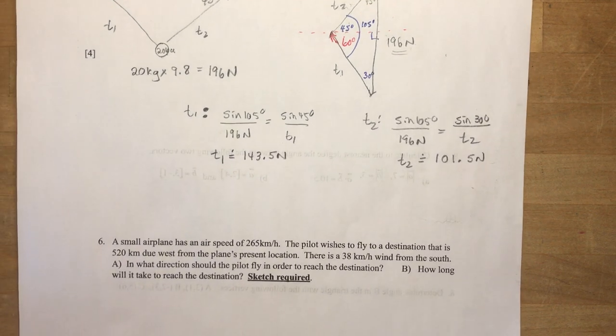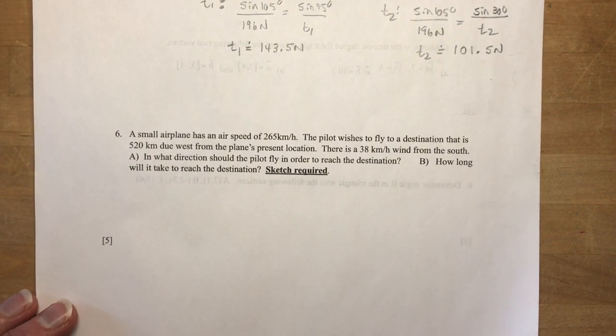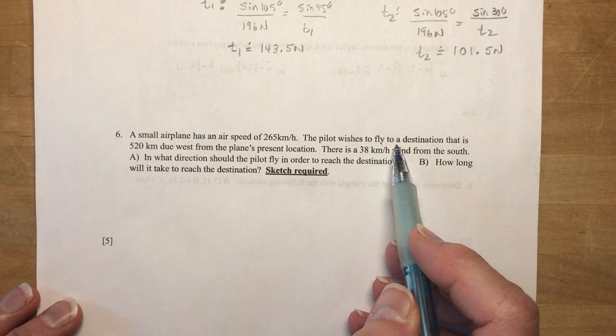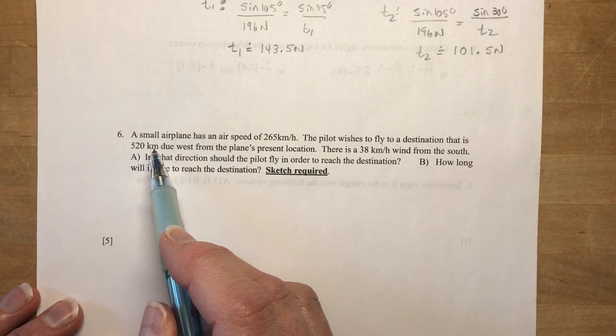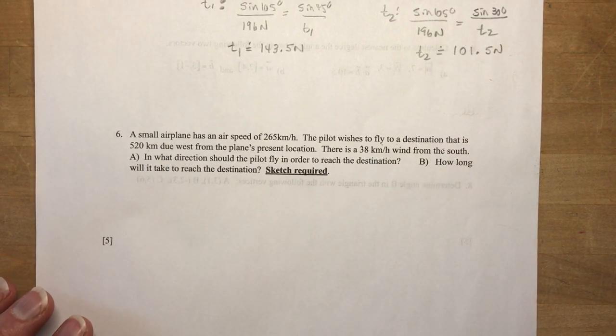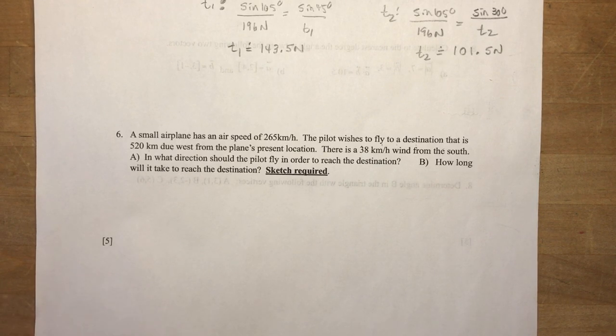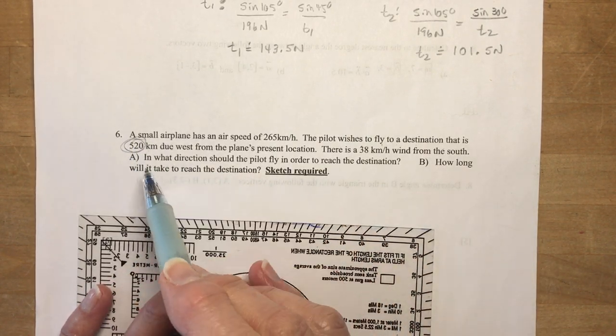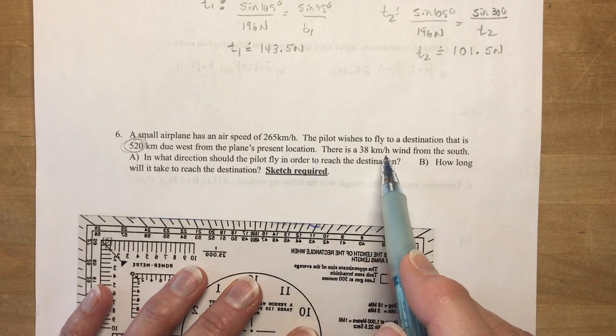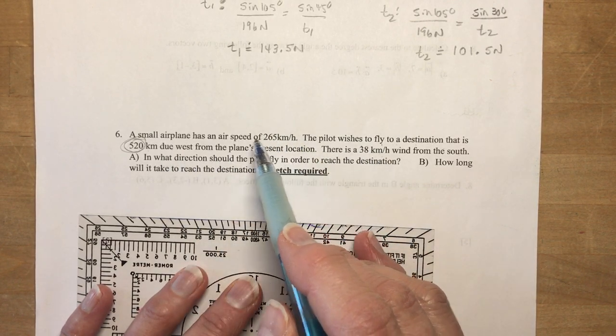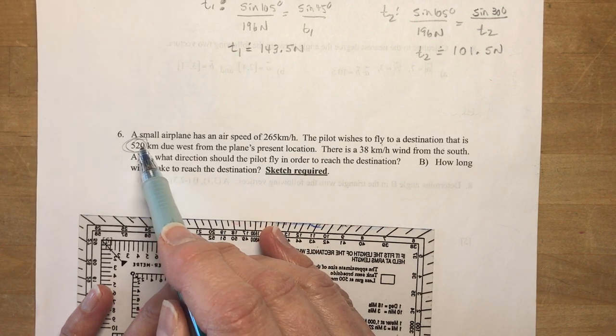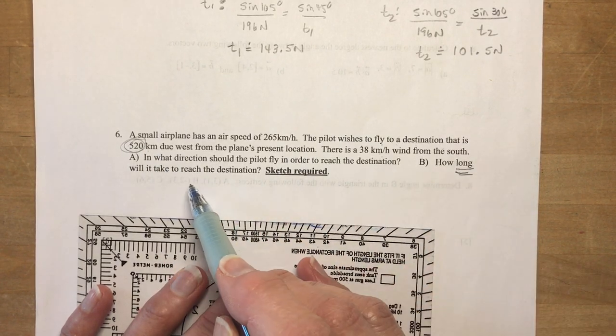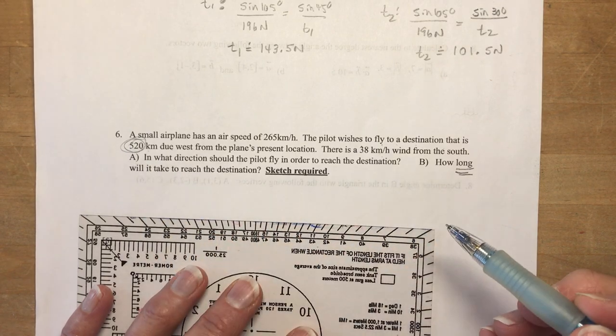Okay, so on to an airplane question. It says a small airplane has a speed of 265 kilometers per hour. The pilot wishes to fly to a destination that is 520 kilometers due west. Remember in my lesson about directions and airplanes and boats, this 520 kilometers is not in the same league as these, right? These are vectors. So we have, this is a distance due west. It's not a velocity. So this is what we're going to need to figure out how long it will take to get to the destination. So don't use that in your diagram.